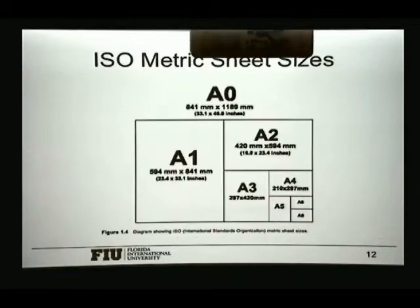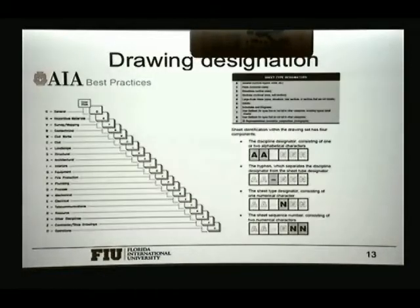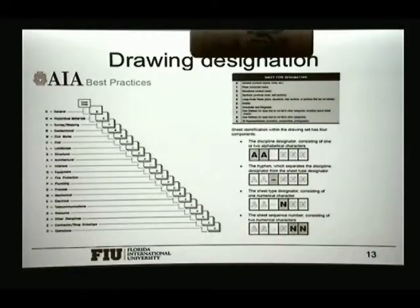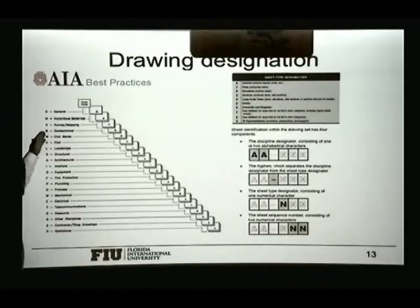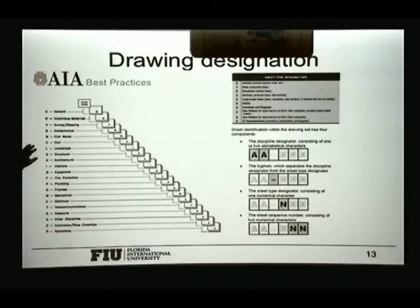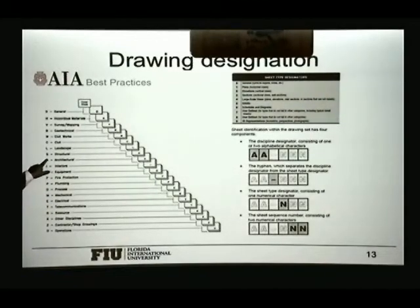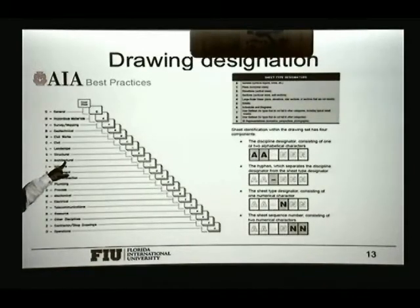There are different types of paper sizes, and depending on the paper size you may have different scales. AIA has a best practice, at least for the different types of drawings that you may have, and a code to those. So that way, if you look at any packet of drawings and you see they start with the letter A, those are architectural drawings.